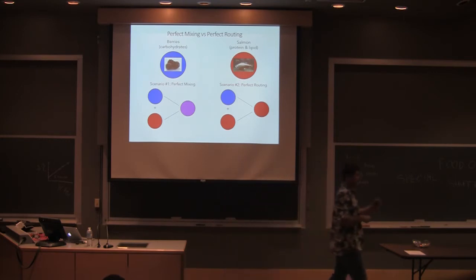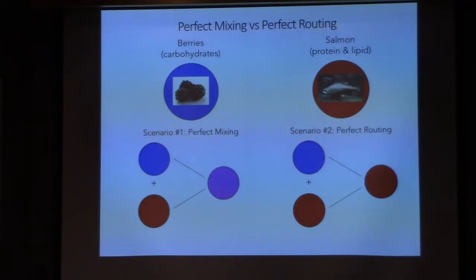The routing scenario: the bear takes the salmon, the protein in the salmon to build the protein in his tissue. So it's directly routing the protein in. Even though the bear is eating these two things, the isotopic composition of its tissues looks like the salmon. It doesn't look like the berries.